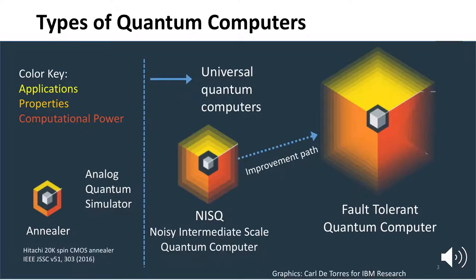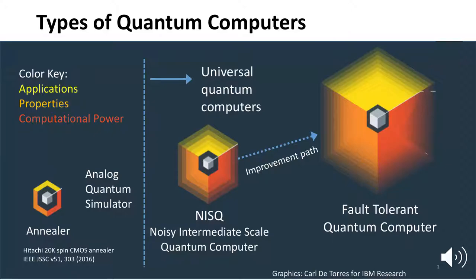Quantum computing is about working out how to use these two principles in a new model of computation. I will focus on technologies for universal quantum computing, the only type of quantum computing with a proven advantage, and will not discuss annealers or analog quantum simulation. Universal quantum systems can execute any algorithm, and we are currently at the noisy intermediate-scale quantum, or NISQ, computer stage. There is an improvement path from NISQ machines to fault-tolerant machines by adding error correction, but the resource overhead is very large.